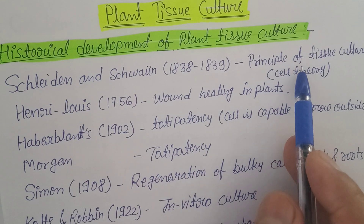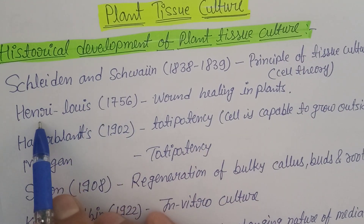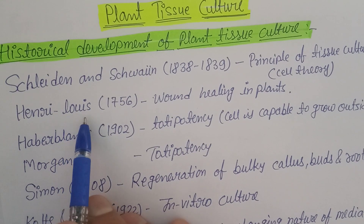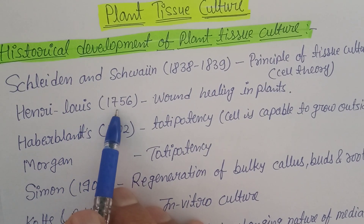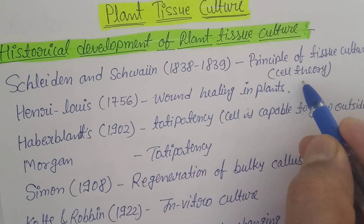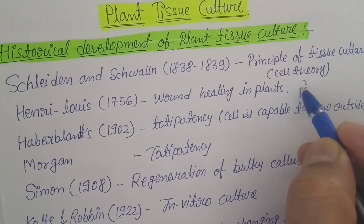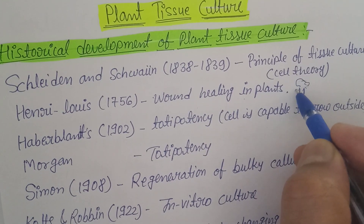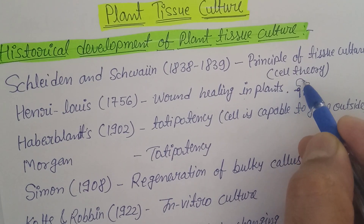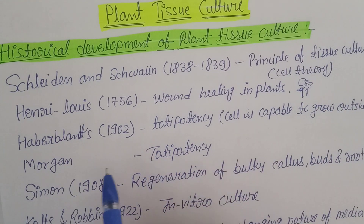Before that, Henry and Lois told about wound healing in plants in 1756. Any plants may also have particular types of wounds in their stem and branches, and those can be healed by their own metabolites — that concept was told by these scientists. Then Herbert Land in 1902 gave the initial concept of totipotency.